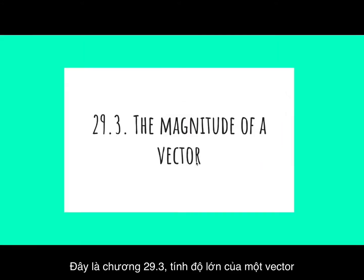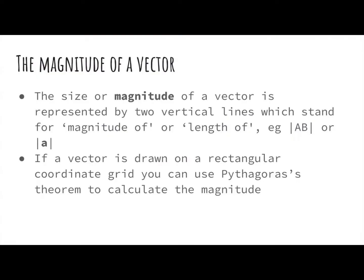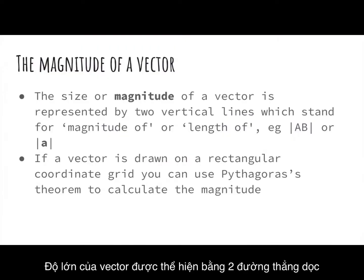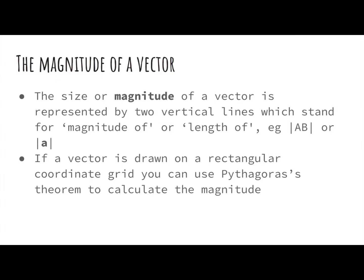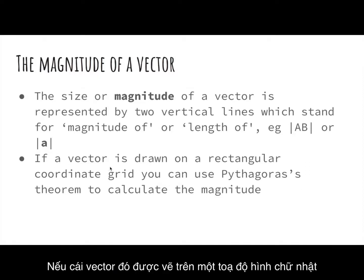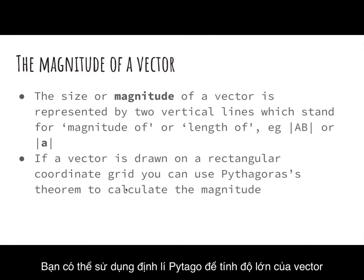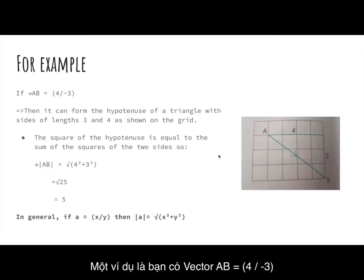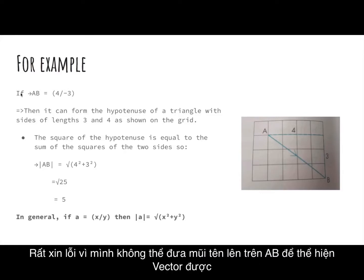Section 29.3: The Magnitude of a Vector. The size or magnitude of a vector is represented by two vertical lines, which stands for 'magnitude of' or 'length of'. For example, |AB| or |a|. If a vector is drawn on a rectangular coordinate grid, you can use Pythagoras' theorem to calculate the magnitude. For example, vector AB equals (4, −3), meaning to move from A to B: 4 to the right and 3 down.